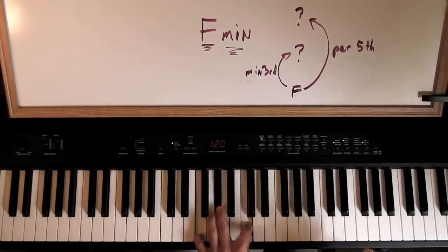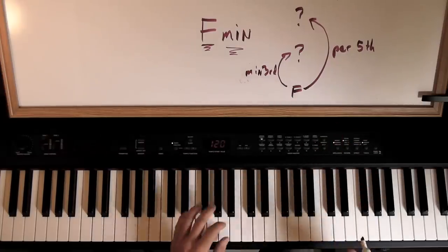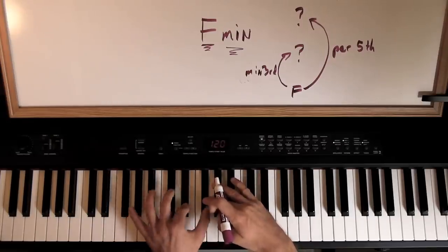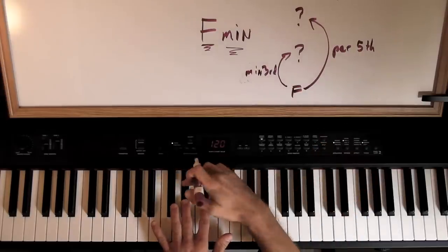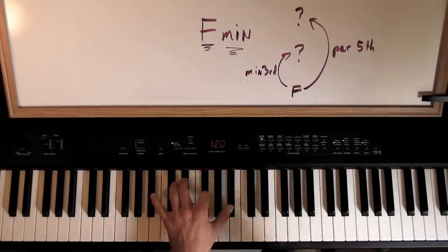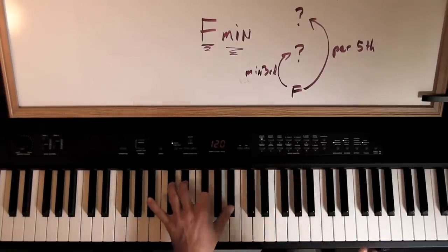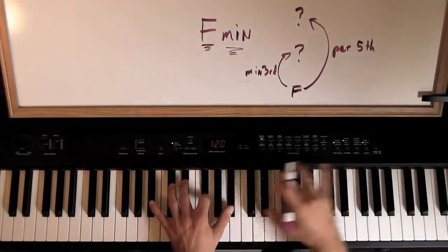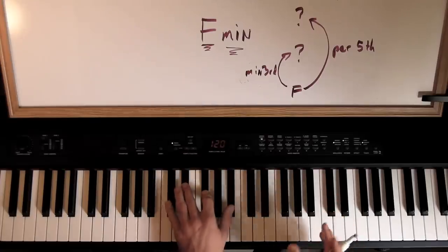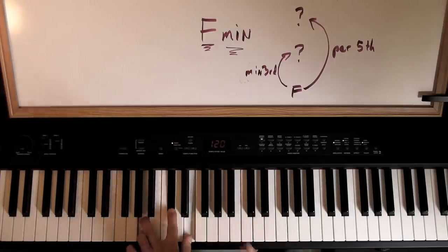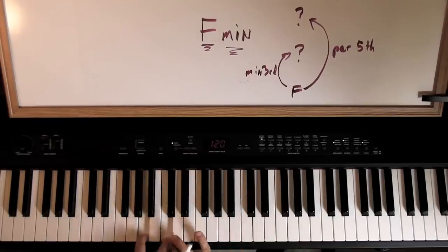The minor chord formula works on any root note. Starting on E flat: go up a minor third — be careful in that area as things look a little strange — and then your perfect fifth, same as always. Those two chords, major and minor, are by far the most common. The more advanced chords are usually built on top of these, so spend time picking random notes and finding the full chord as quickly as you can.